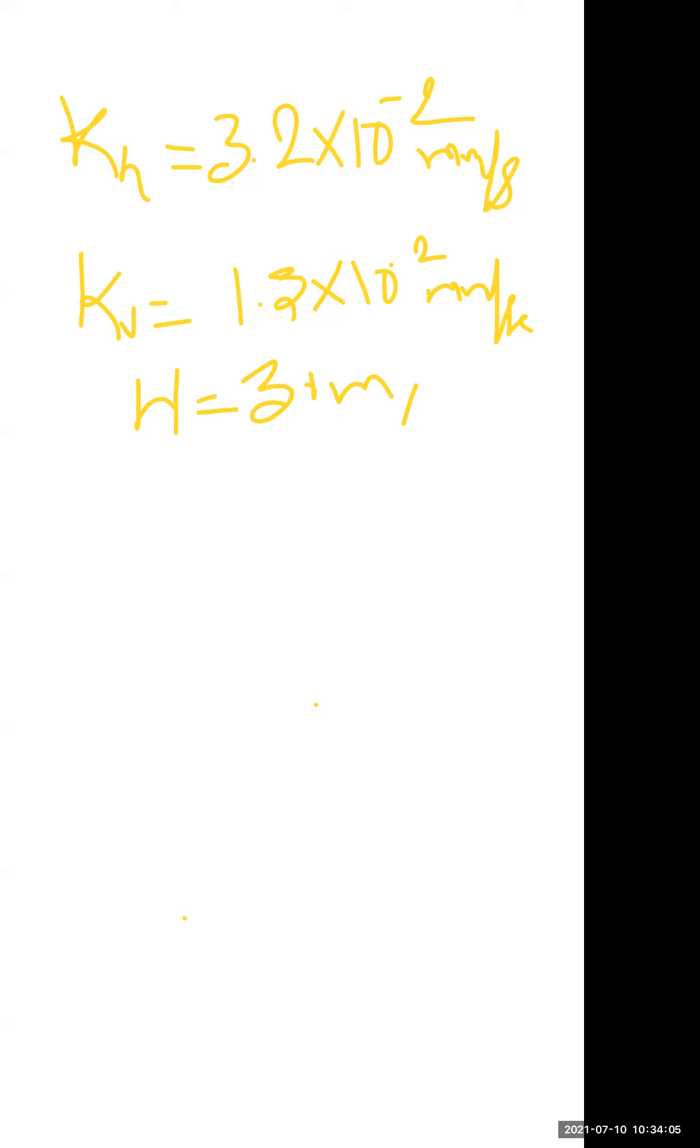The flow net constructed for the transformed section of the dam consists of 5 flow channels, so NF equals 5, and 13 potential drops. So the potential drop ND equals 13.